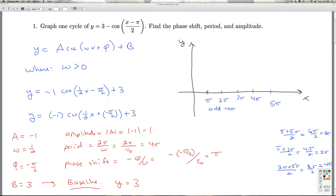Okay, so if I know the phase shift and the period, that's how I get the new quarter marks. Now I use the fact the baseline is y equals 3. I'm going to dot that in. The amplitude is 1, so that means that this curve is going to oscillate one unit above and below the baseline.